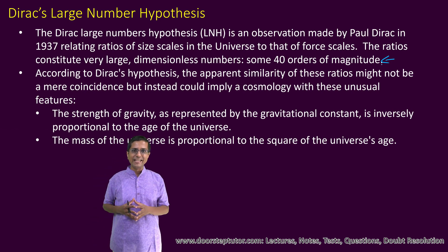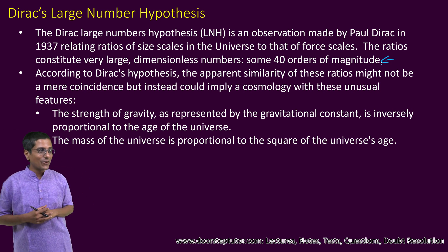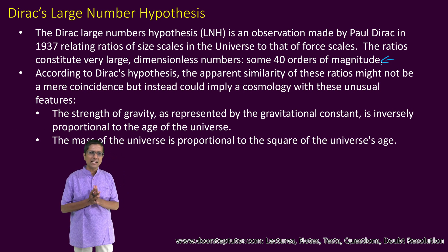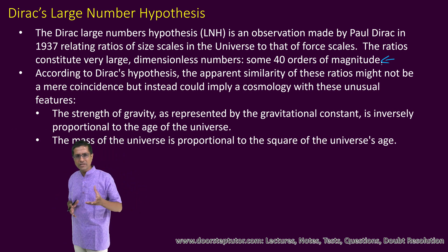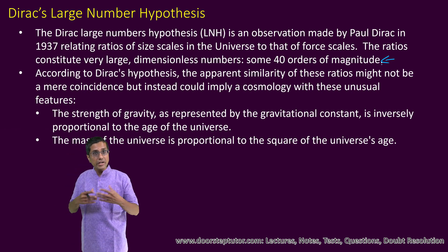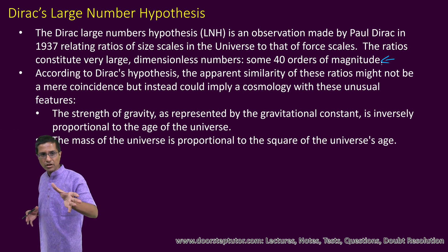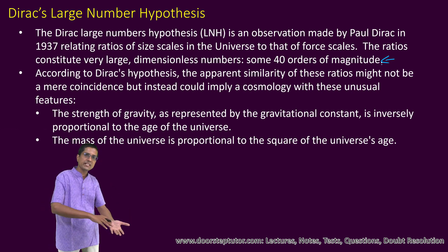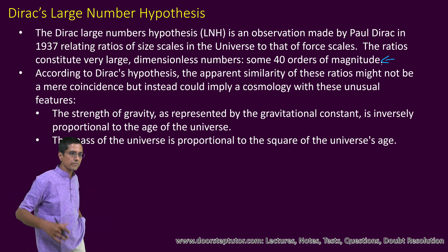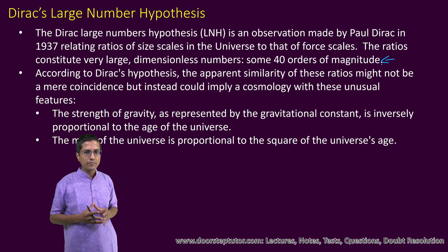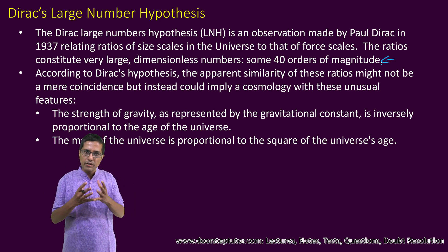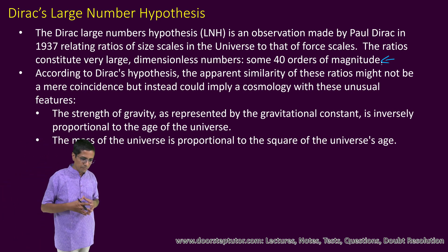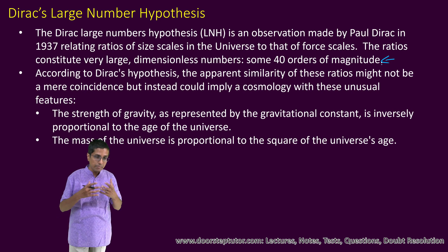One of the things Dirac was interested in — almost as a hobby — was looking at the various constants that occur in nature and finding out why things are the way they are. For example, why is the gravitational constant what it is? One thing he noticed was that there is always a 40 orders of magnitude difference between the smallest and the largest things we observe in the universe. Researchers have said that this is not just a coincidence.